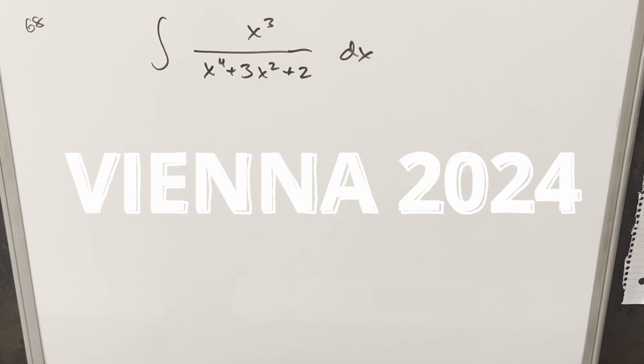Okay, we have to take another integral from the Vienna integration B 2024, problem 68. We have the integral of x cubed over x to the fourth plus 3x squared plus 2 dx.